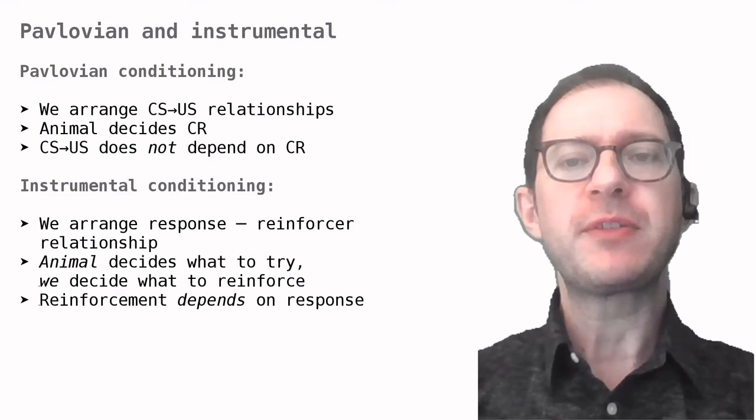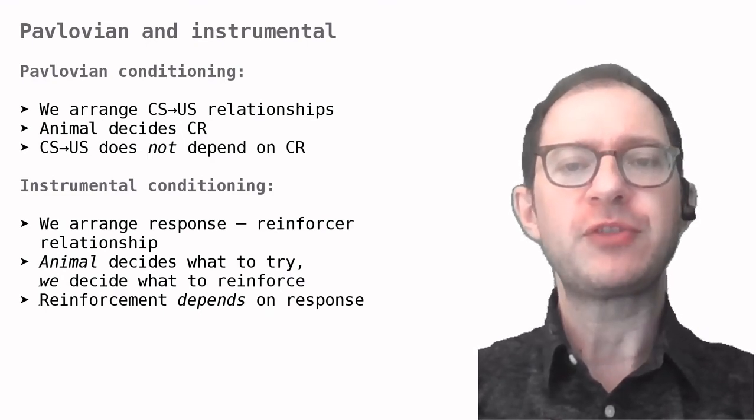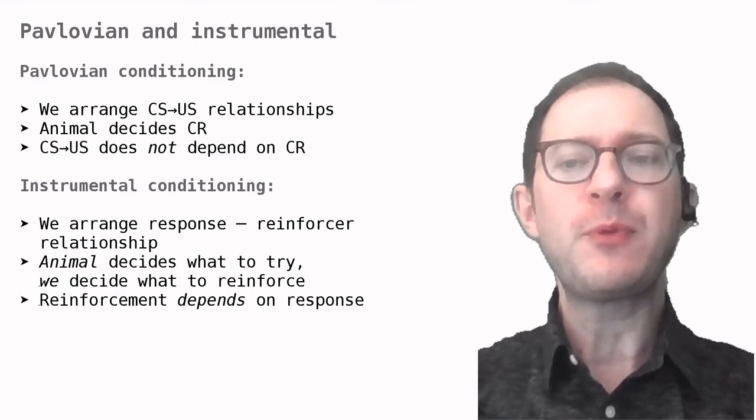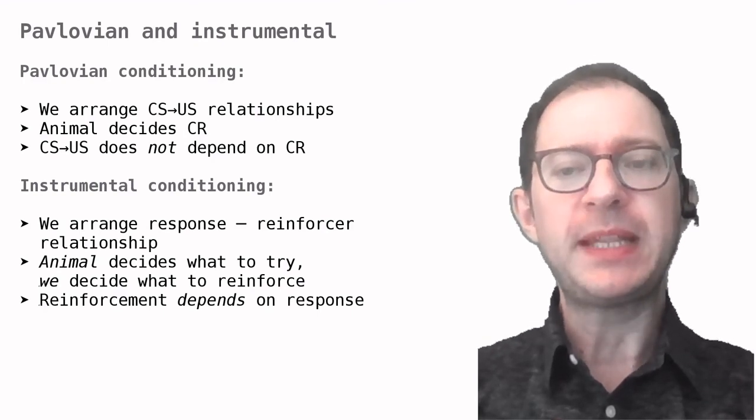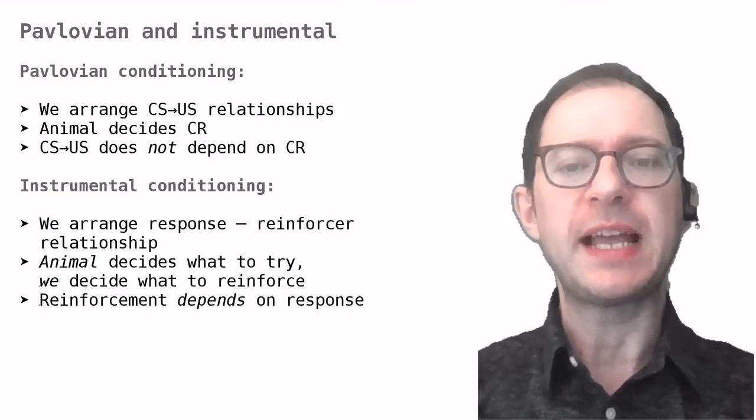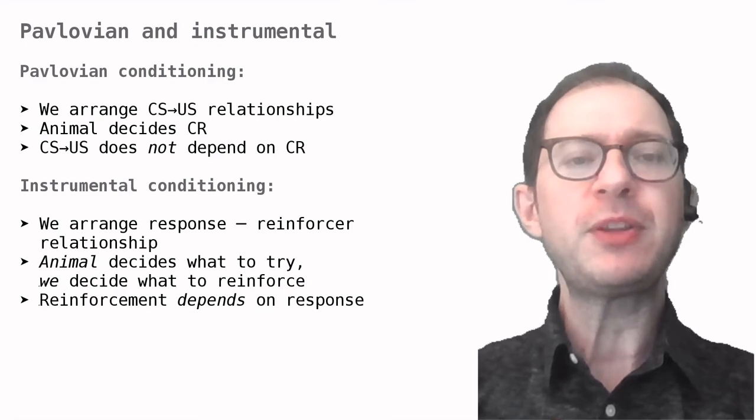In instrumental conditioning, on the other hand, we arrange a relationship between a behavior and the reinforcer. The animal can try out different behaviors, but only the one that we have chosen is reinforced. Even if there are some limitations, as seen in the previous slide, we are free to pick up pretty much any behavior.